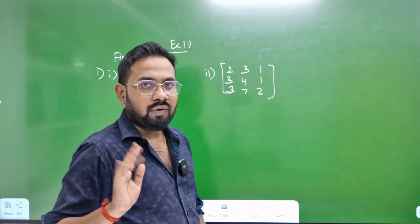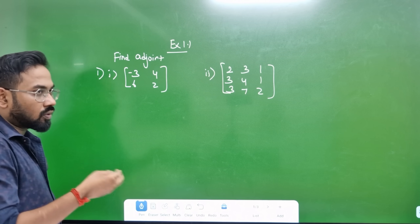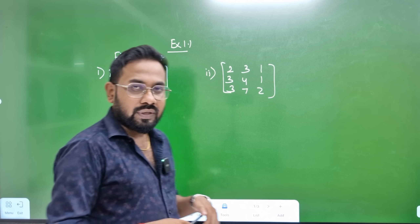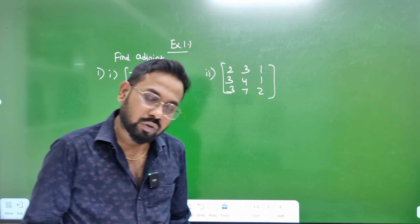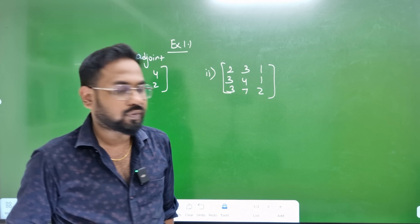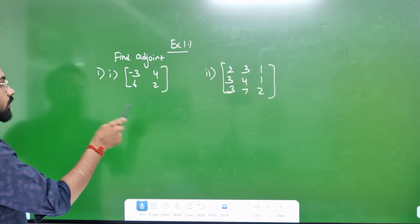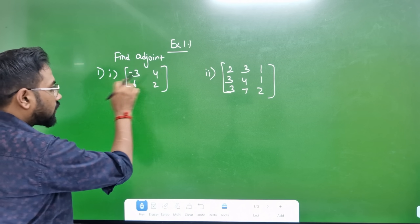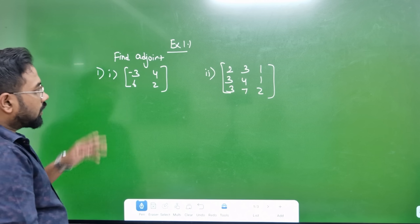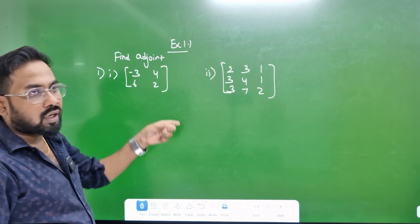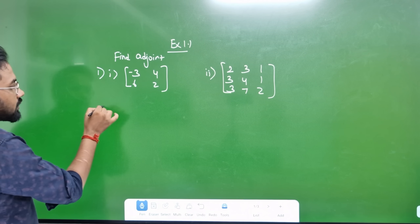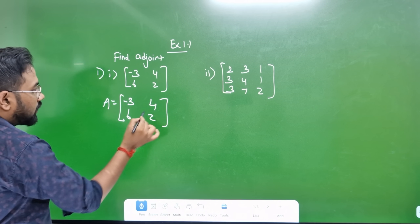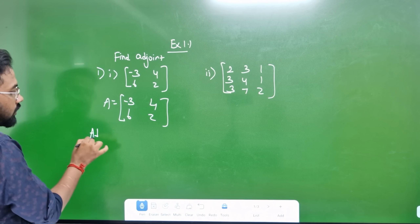If you look at this, I will try to write it. First, a 2x2 matrix — 1 row, 2 row. If you look at the row, then 2 rows. Then a 2x2 matrix: A = [3, 4; 6, 2]. If we go here, we can find the number — Adjoint A.